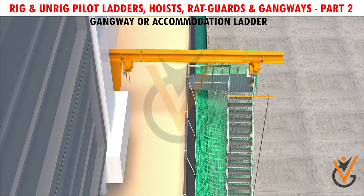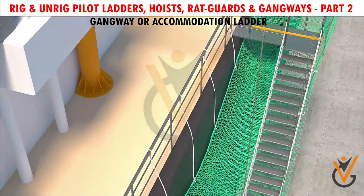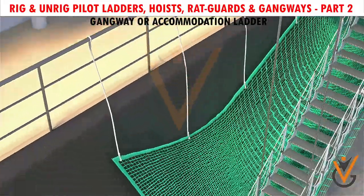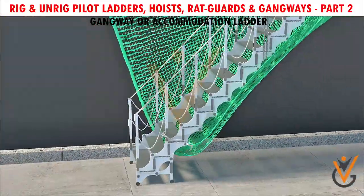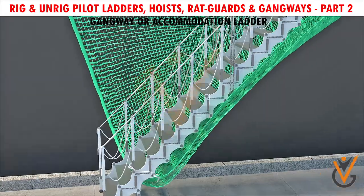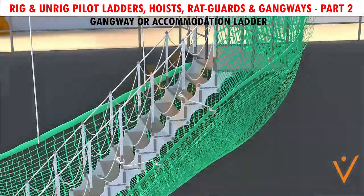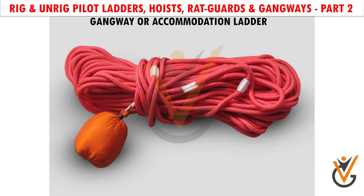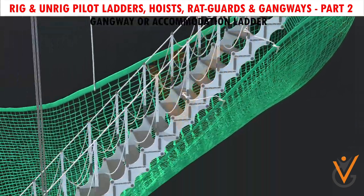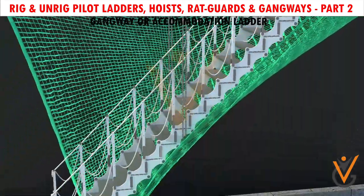When a vessel is alongside a quay, a proper gangway or accommodation ladder should be provided, and it must be properly secured and tended. At night, gangways should be lighted throughout their length. A life buoy and a line should always be available close by. Safety nets should be rigged if required.